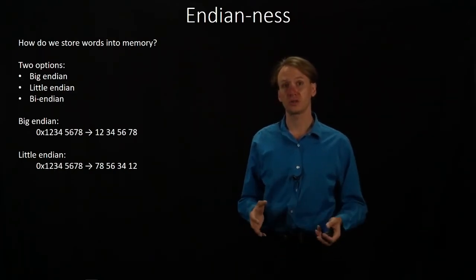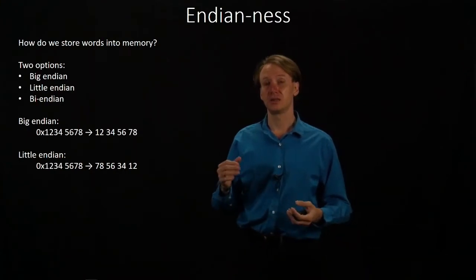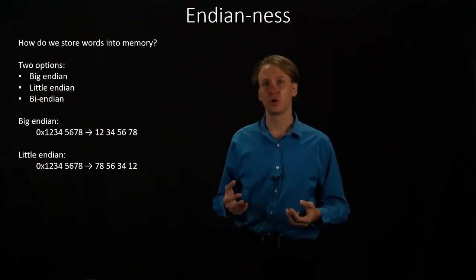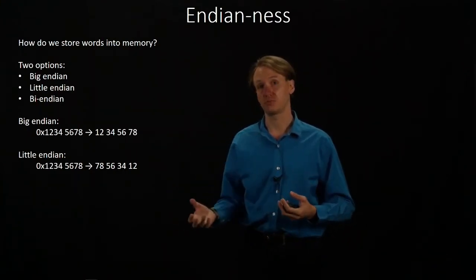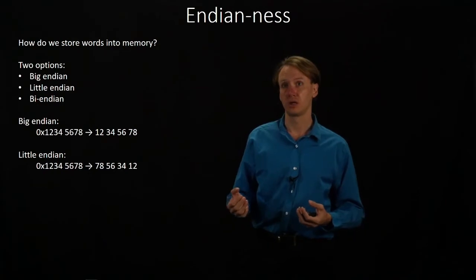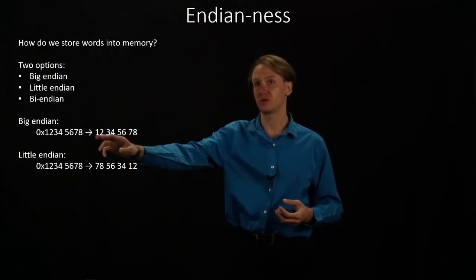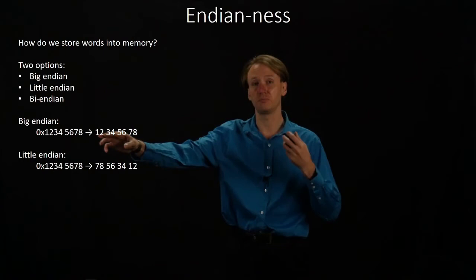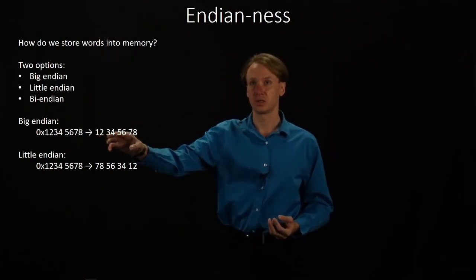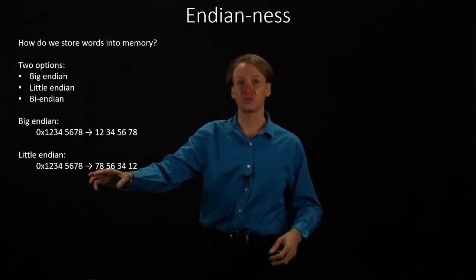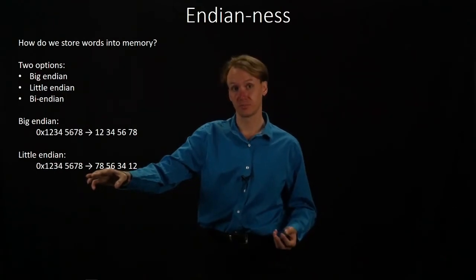The important thing to remember about Endianness is that the name tells you which end of your number the address points to. In a Big Endian system, the address tells you where the most significant byte is — it's telling you where the big end of your number is. In a Little Endian system, the address is telling you where the little end of your number is.